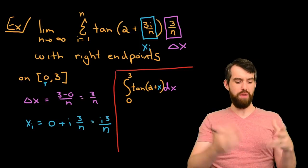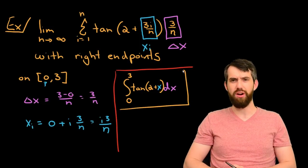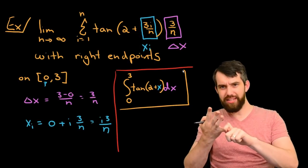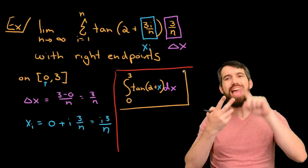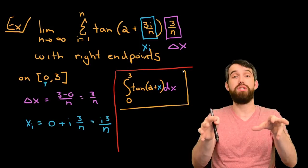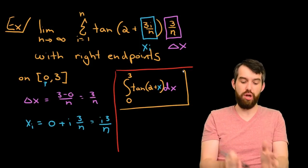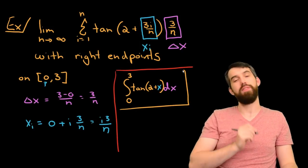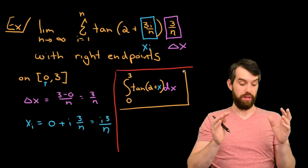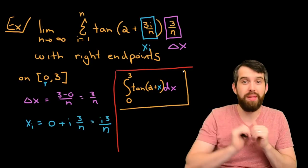In other words, when going from the Riemann sum into this definite integral that we've written down, that's our final answer here, it was all about figuring out what was the delta x that was going to go into the dx, what was the x_i that was going to turn into an x, and then everything that remained was going to go into the function. The tangent and the 2 plus, that was going to go into the function, and the x_i turned into the x, and the delta x part turned into the dx. Okay, so that was a fairly straightforward example. Let us see one more slightly more complicated example.